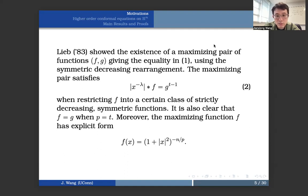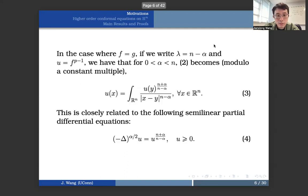And in this case, the maximizing function f has an explicit form: f of x is equal to 1 plus x squared to the power n over p. Now in this case, where f is equal to g, let's make some change of notations. So now if we write lambda equals n minus alpha and u equals f to the power p minus 1,